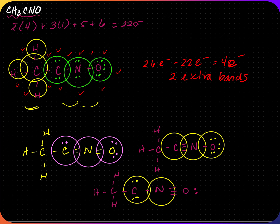All Lewis dot structures must be separated by a double-headed arrow. This molecule is not an ion, so it does not need brackets.